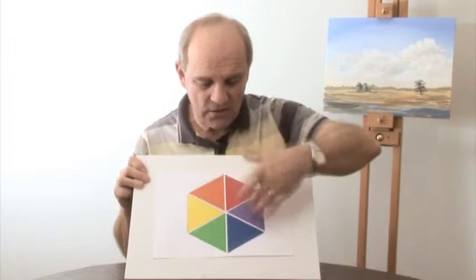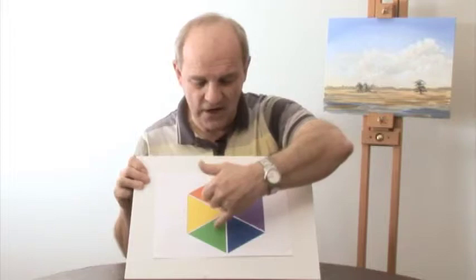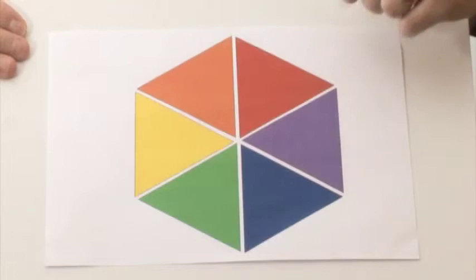That really is all that you need to know, because those six colors, when they're intermixed even more, will give you a whole series of different colors. For example, if you mixed red and green together, you'd end up with brown.